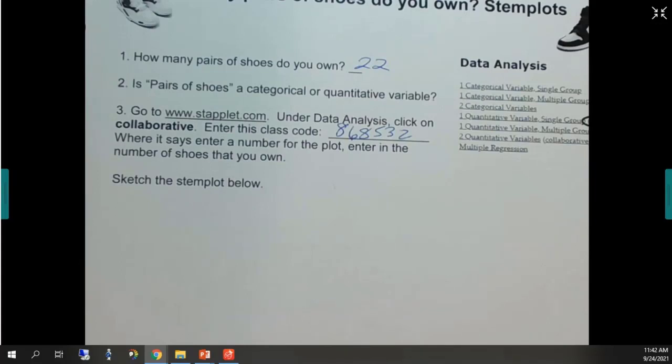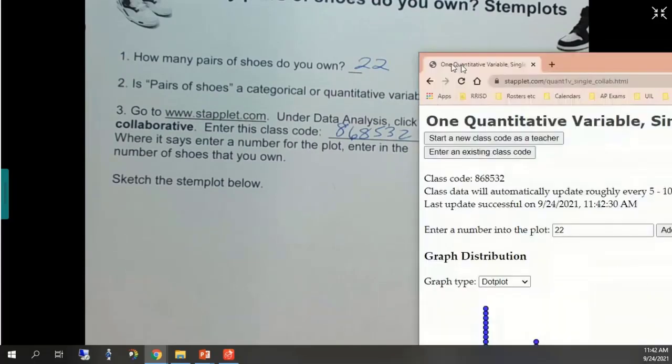All right, so do we get all our dots in? Oh it looks like we got 25. A lot of you have four pairs of shoes. That's interesting. All right, so you should be able to now. I'm gonna go ahead and pull my staplet over so you can see it. It looks like yours.